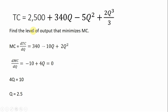In another example using that same total cost equation, we find the level of output that minimizes marginal cost. Here again, we get marginal cost first; once you have the equation you're trying to minimize, you take the derivative of it and solve for q.